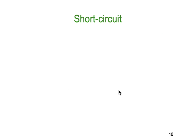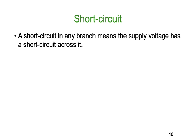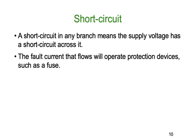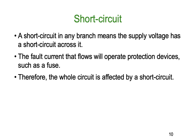What about a short circuit? A short circuit in any branch means the supply voltage has a short circuit across it, and that is not a good thing. A fault current flows and will operate the protective device, such as a fuse or a circuit breaker. Therefore the whole circuit is affected because the protective device will operate — the fuse will either blow or the circuit breaker will trip.